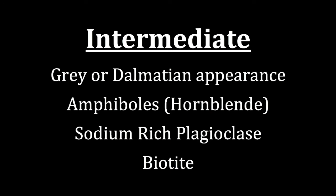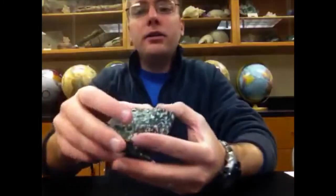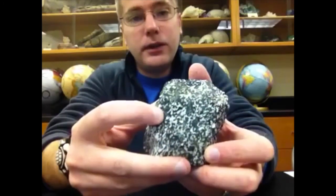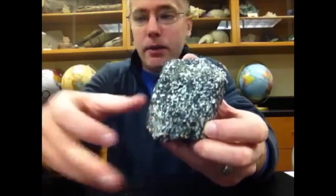The next magma type is intermediate. When we're looking at rocks that have an intermediate magma type, we typically see colors of gray or sort of a dalmatian appearance. We're looking at minerals for the dark color that are amphiboles, which can also be called hornblende — the most common amphibole we've seen in labs. The other dark color is biotite. The light color often seen in intermediate rocks is sodium-rich plagioclase. Calcium-rich plagioclase is very dark in color, while sodium-rich plagioclase gives us that very light color, and the amphiboles/hornblende as well as possibly some biotite make up the dark color.